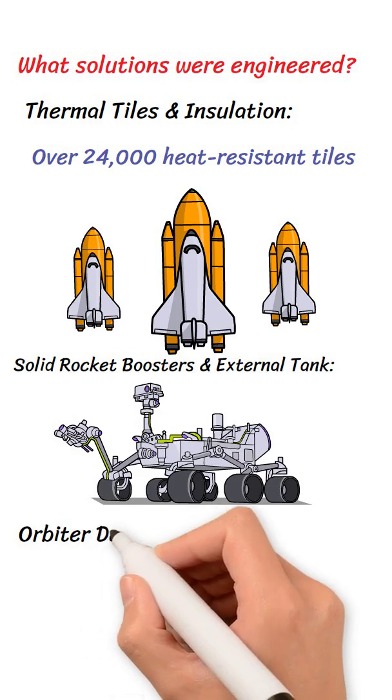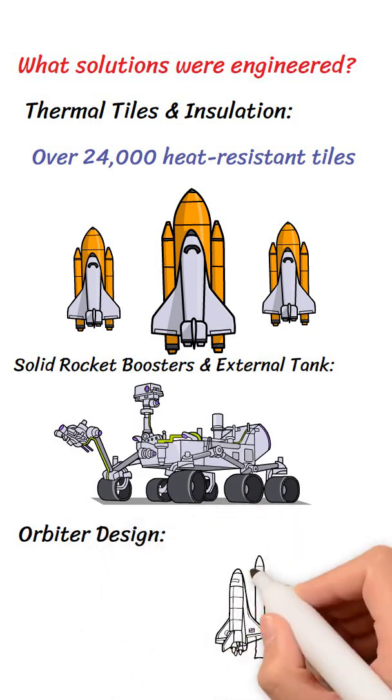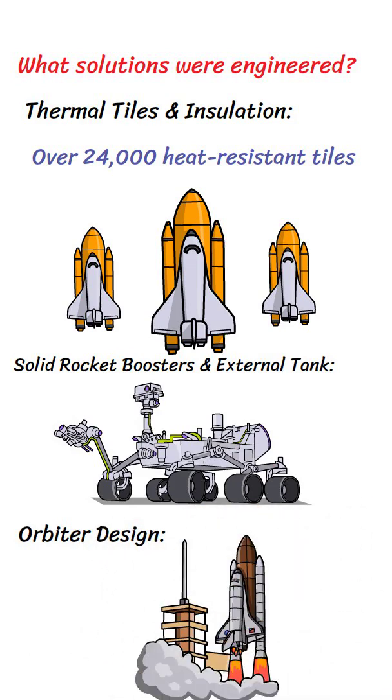Orbiter design. Wings, landing gear, and onboard systems allowed controlled glide landings on a runway.